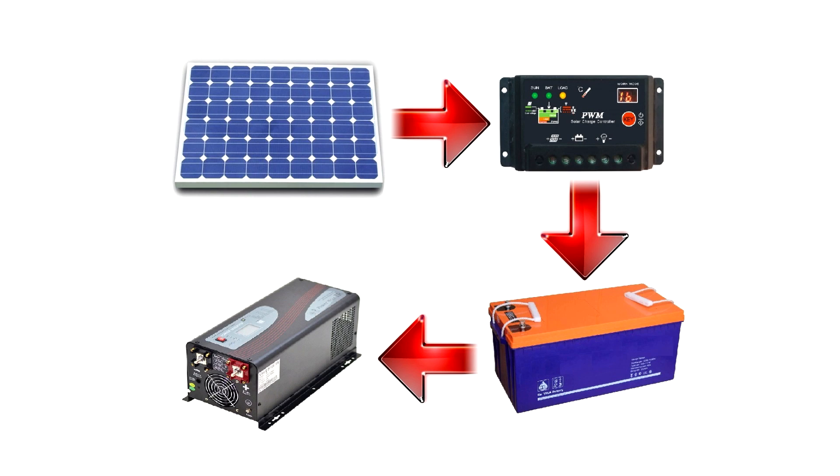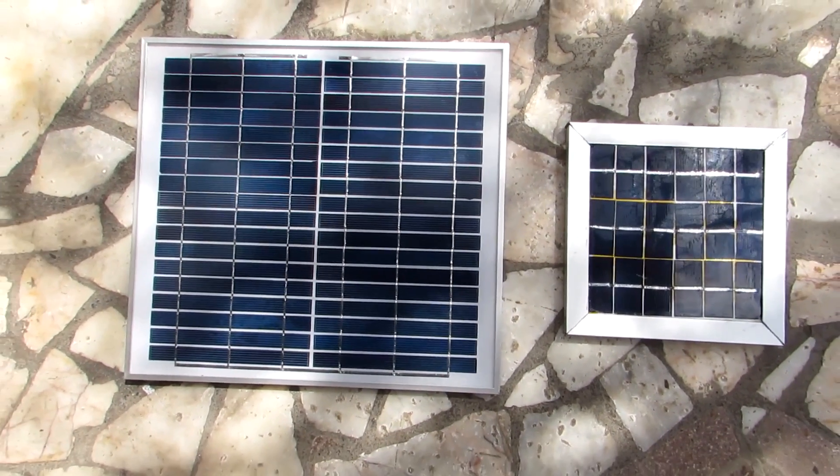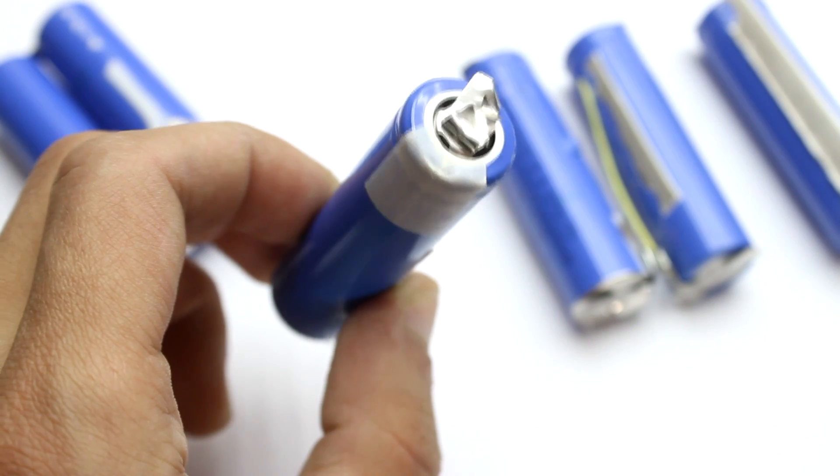Any solar station consists of a few main units: the solar cells, the controller, energy storage devices in the form of batteries, and a conversion system. Our station is also equipped with these units although everything is not as serious as in large solar stations. But let's return to the batteries.